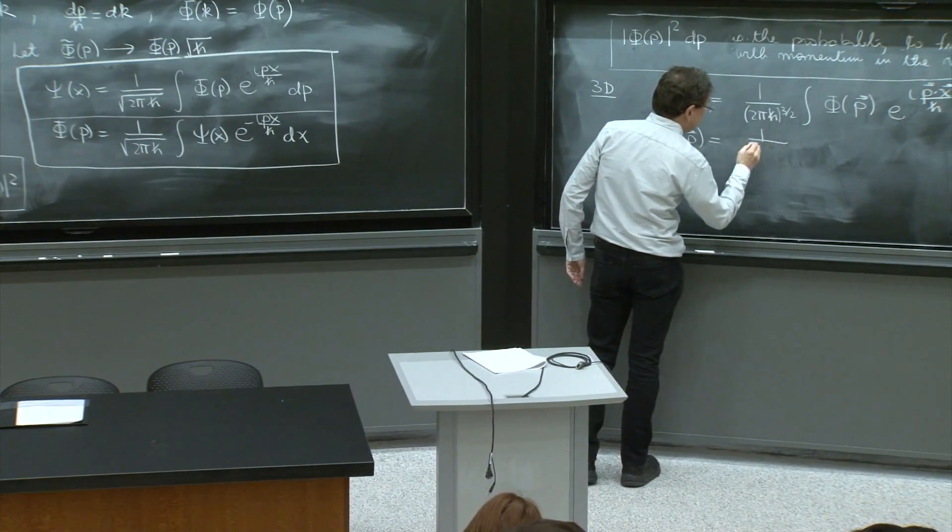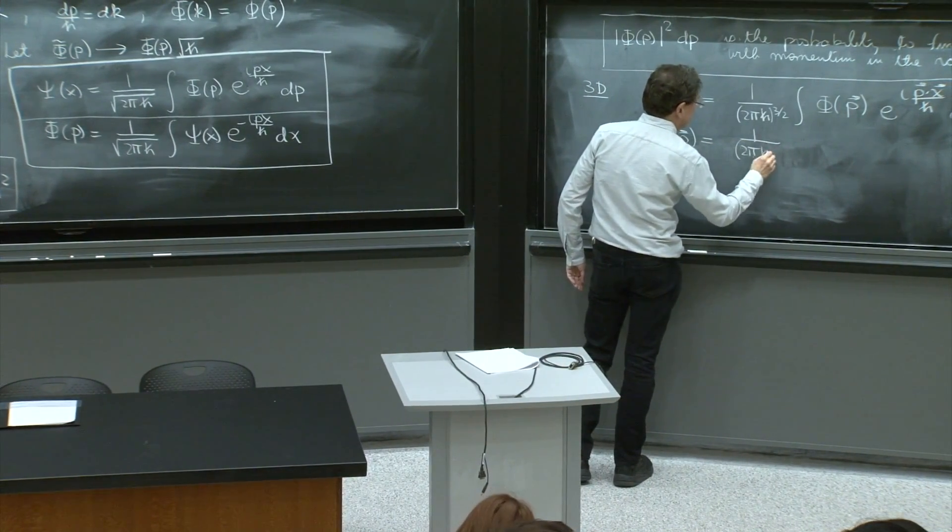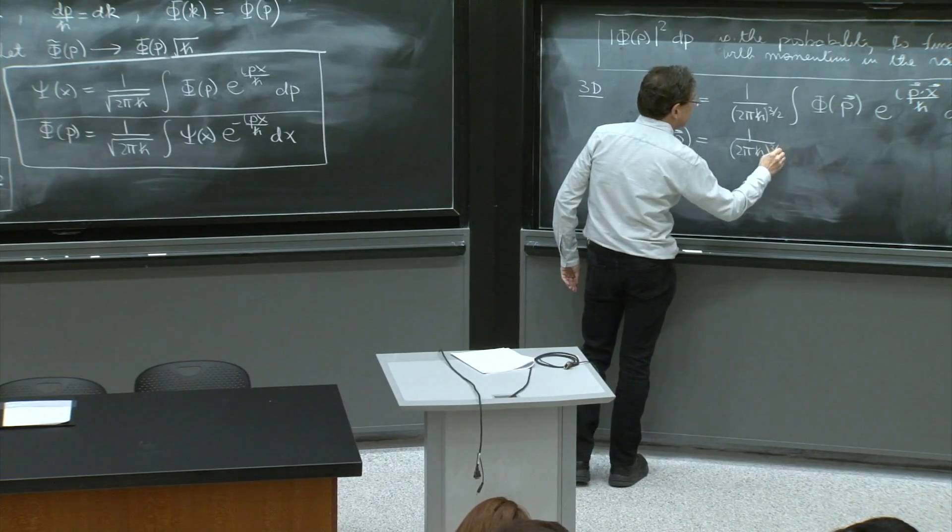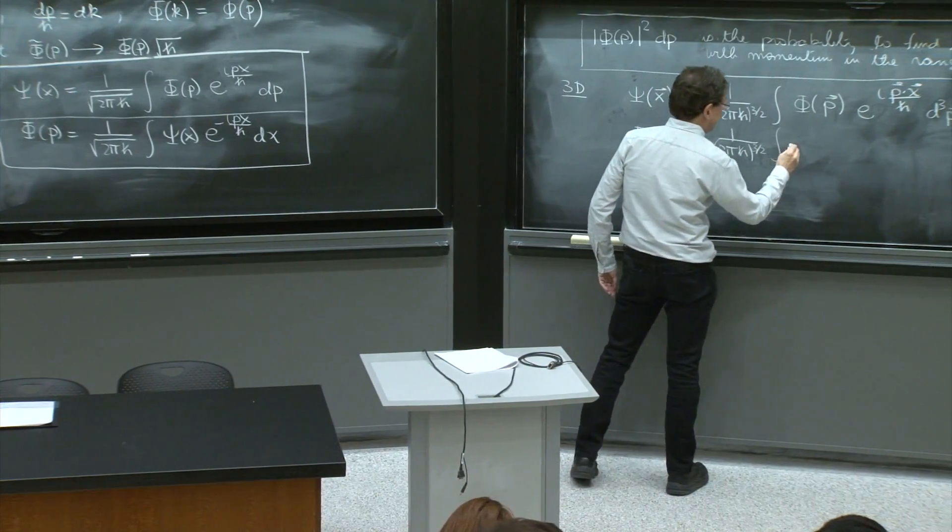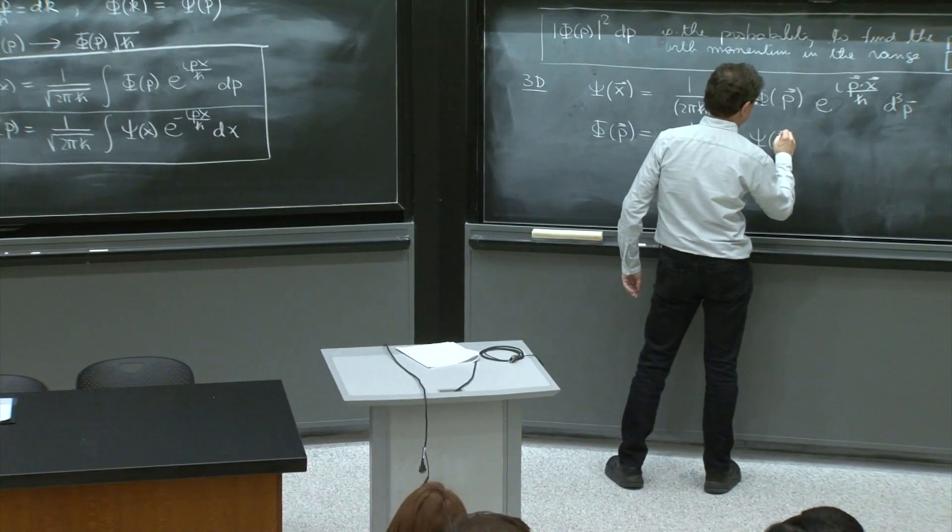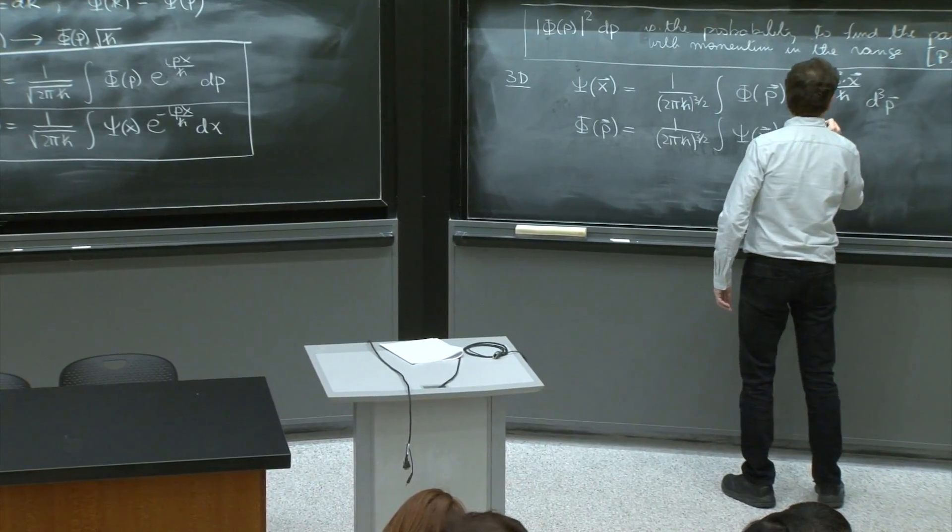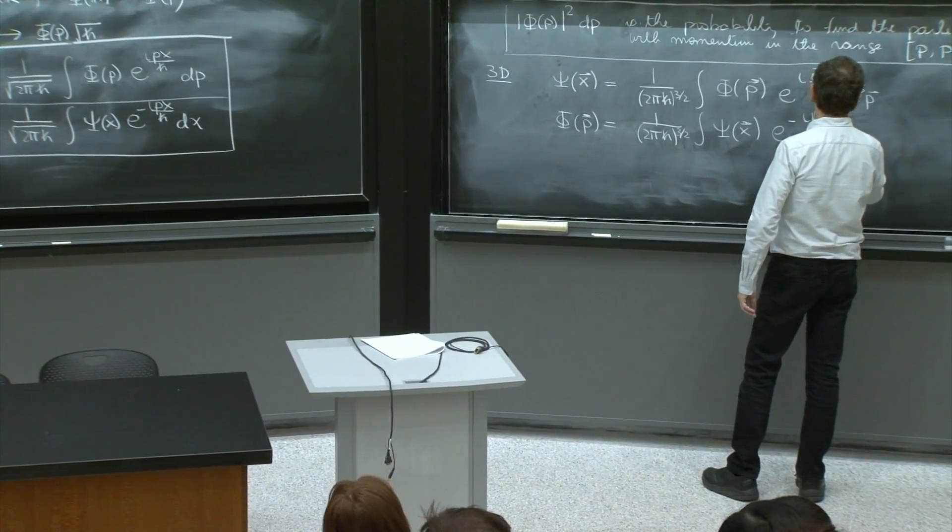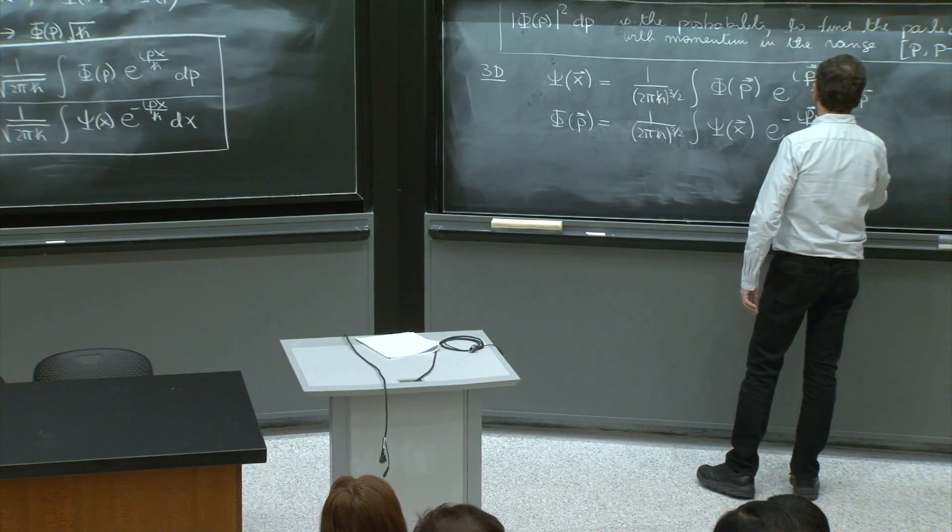dot product vector x over h bar d cubed p. And phi of p vector, the inverse theorem, same factor. We keep the nice symmetry between x and p. Psi of x vector, negative exponent,